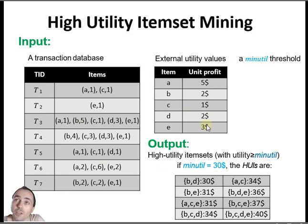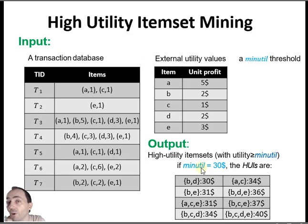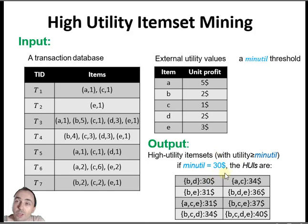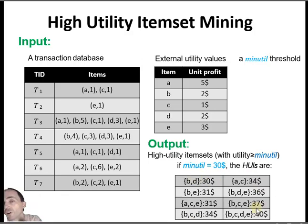So in this problem the user needs to set a minimum utility threshold — some minimum amount of money. For example, we want to find all the high utility item sets, meaning all sets of items that people buy together and yield at least $30 of profit. This is the result: here we have the high utility item sets. There are many algorithms that will find this result for you.